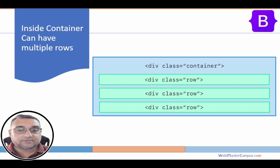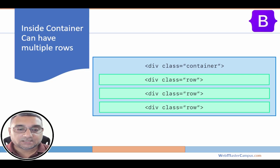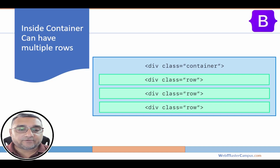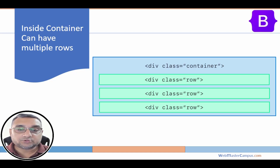A container can have multiple rows — there is no limit on the number of rows; it depends on your design requirement. You can have three, four, or ten rows. This is the essential definition and detail of Bootstrap. In the next video, I will show you how to use Bootstrap on your web page.